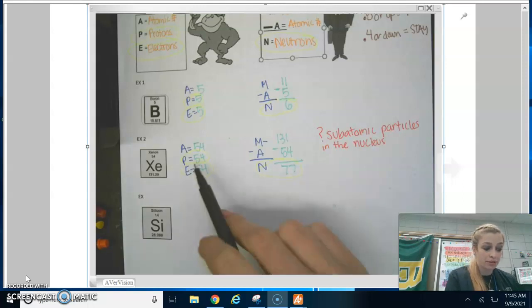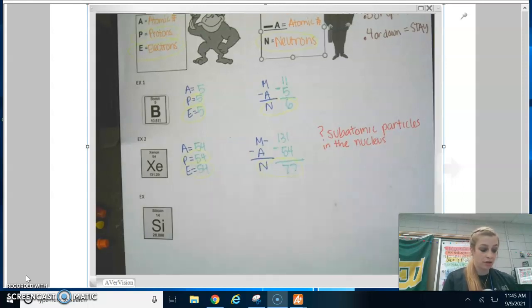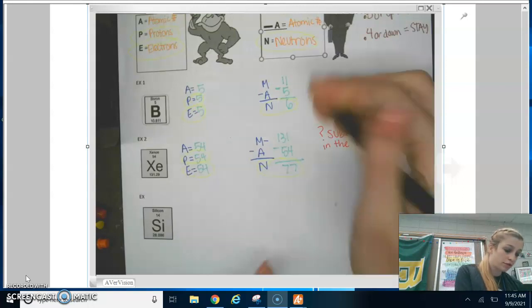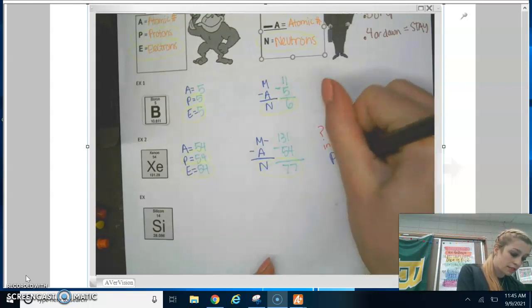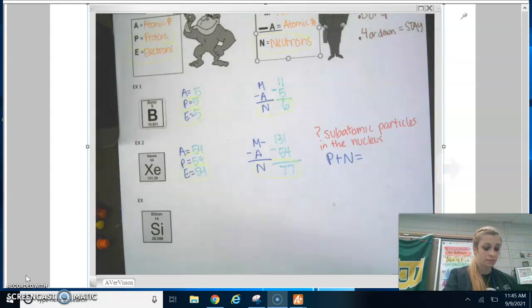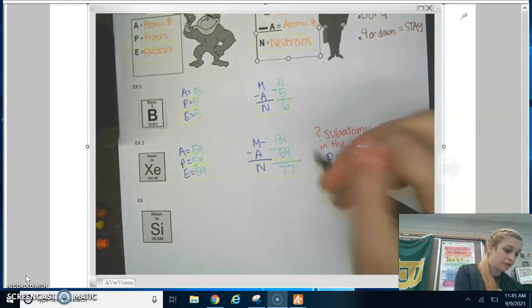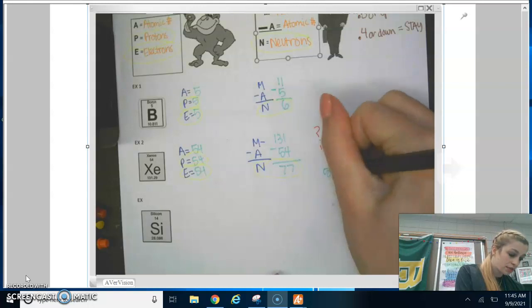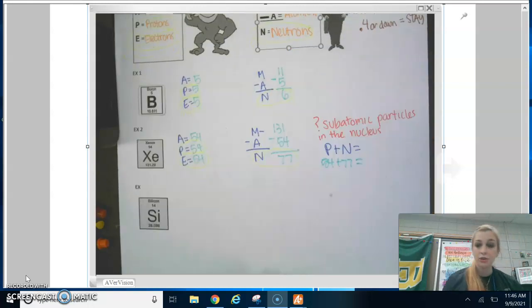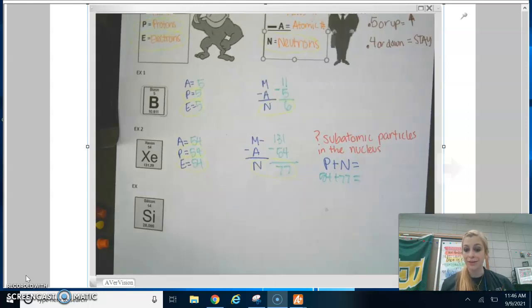Last one. Our atomic number, the number on top, 14. So there's 14 protons. So there's 14 electrons. Our mass is 28. Atomic number is 14. So there's also 14 neutrons. So you found protons, electrons, and neutrons.